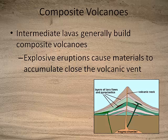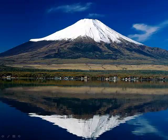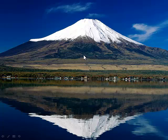A composite volcano is made up of layer after layer of materials erupted from the volcano that couldn't travel very far, building a relatively steep-sided volcano. An example is Mount Fuji. You can see that its height compared to its width is much greater than Mauna Loa, our shield volcano example.